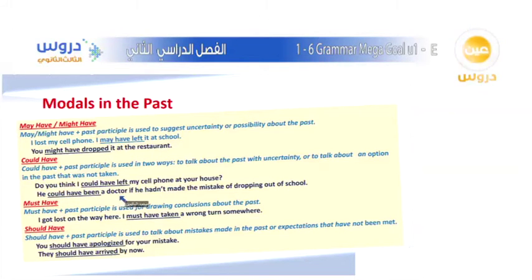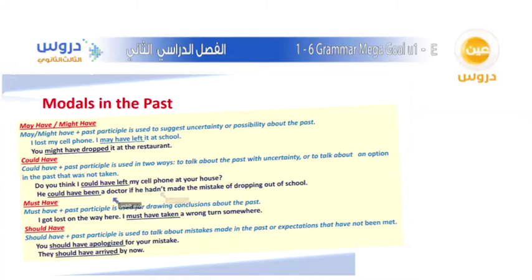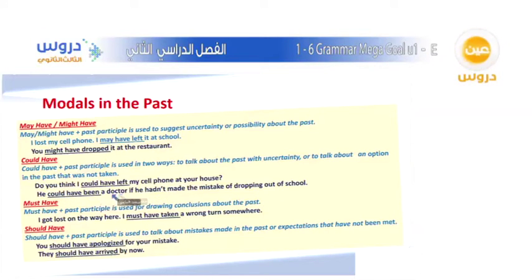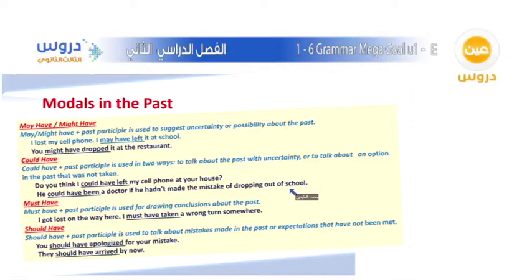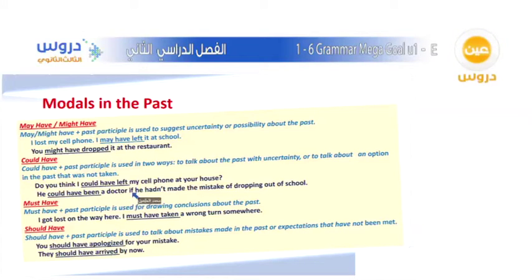Number two: to talk about an option in the past that was not taken. For example: He could have been a doctor if he hadn't made the mistake of dropping out of school. So in the past he dropped out of school, and this sentence gives an opinion about an option that was not taken.